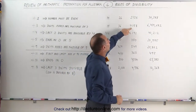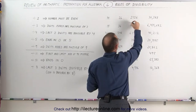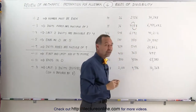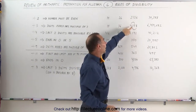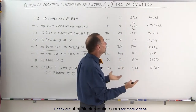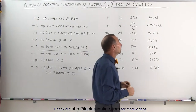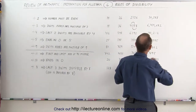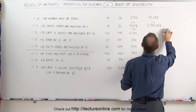How about 4,158? I can add 4 and 5 together, and add 8 and 1 together. Since 4 plus 5 is 9, which is divisible by 3, and 1 plus 8 is 9, which is divisible by 3, the whole number is divisible by 3. 4,158 can be divided by 3. Again, 4 plus 5 added together is 9, so that's divisible by 3.